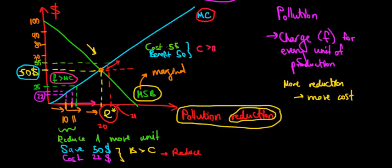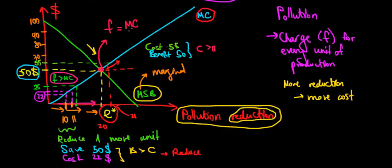By definition, the optimal point is at the intersection where the fee — the tax we are charged — equals the marginal cost of reducing the pollution. In the next video, we'll see how this applies when we have two companies in the society that cause pollution.